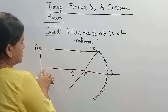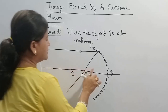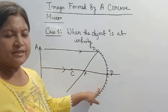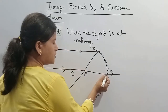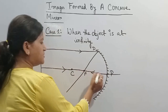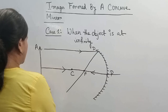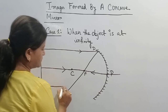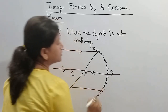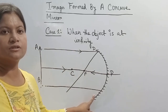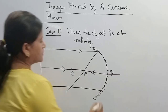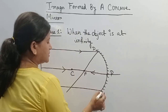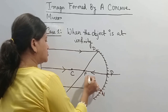Another ray comes from the object, ray AB, and falls on the reflecting surface of the mirror. From this point it will get reflected in the same direction, along the same path. Another ray comes from point B, which falls on the inner surface of the concave mirror at point A. From this point, it will get reflected and pass through the focus.